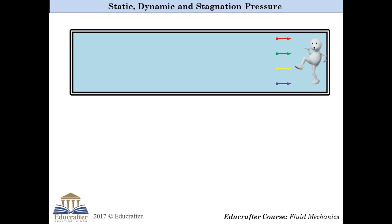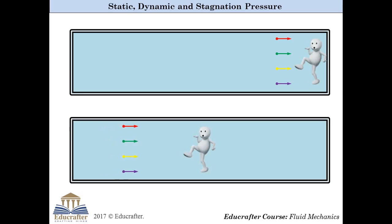Now, imagine that during your travel within the pipe, one of your legs got stuck at some point, and now you are no more moving with the water. But water still keeps on moving with the same velocity and flows over your body. And hence, your body will experience higher pressure compared to the previous case. And this higher pressure is called stagnation pressure.